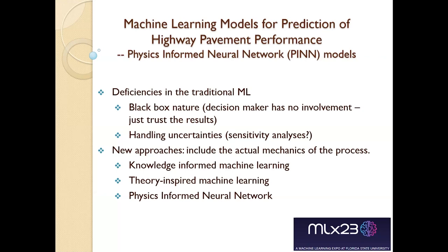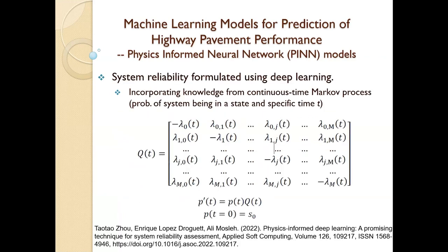We look at the physics-informed neural network. For me, they look similar, except that physics-informed neural networks mostly involve partial differential equations — that's what makes them unique. The first application we're going to implement uses a Markov framework. What you see here is a transition matrix where you have different states an element could be in — in this case, M states. Each element contains the transition time function. From this, you can calculate the probability of your pavement being in a given state at time T. For example, with four states — excellent, very good, fair, and poor — you can estimate where your element will be in two years.